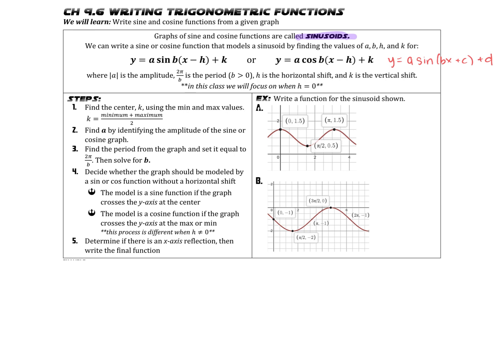I'm going to reference a form that some textbooks use, because the H and K aspect — and the A aspect — tie back to what we learned in previous chapters with different types of functions. H and K reference our translations left, right, up, and down. A represents our vertical stretches and shrinks. B represents our horizontal stretches and shrinks. Our textbook uses C and D in place of H and K, and it's common for different textbooks to reference things differently, so we'll go back and forth between the two.